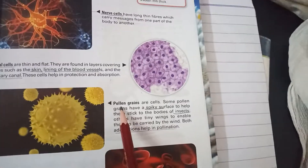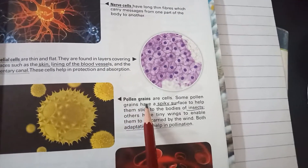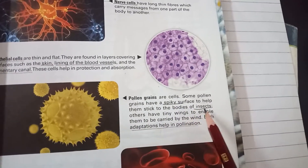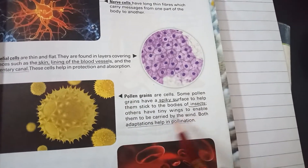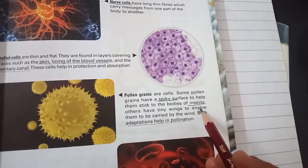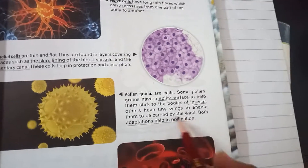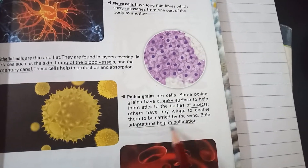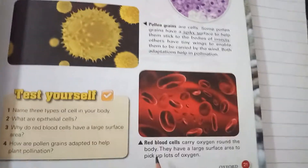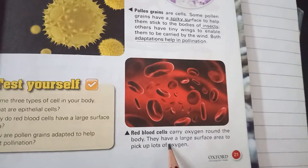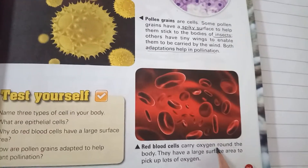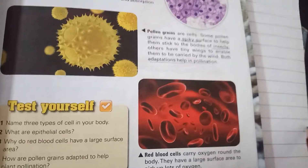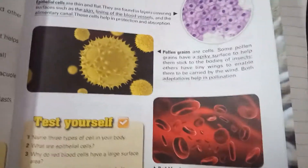Pollen grain cells have a spiky surface, and they stick to the bodies of insects. They can also be carried by wind. Both adaptations help in pollination. Red blood cells are used to carry oxygen throughout the body and have a large surface area to pick up lots of oxygen.